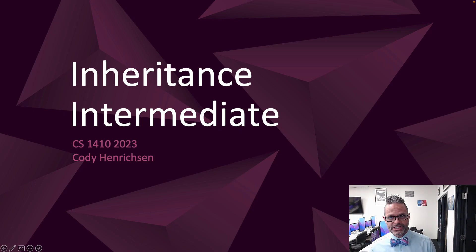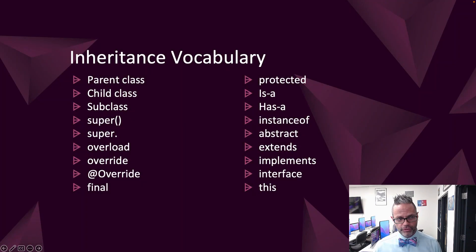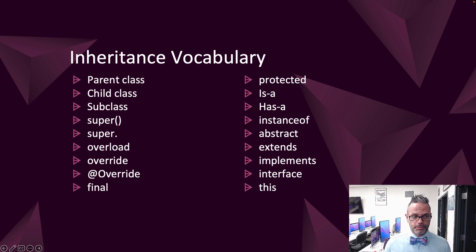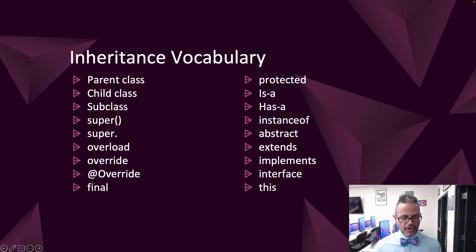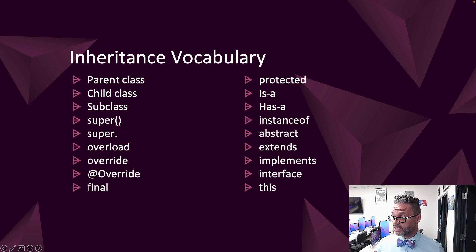Welcome back. We're going to take a look at some more inheritance information today so we can do some cool stuff with Java and explore those concepts. We have vocabulary we went over earlier: parent class, child class, and subclass — generic terms we use to talk about these ideas. 'Super()' refers to the parent class constructor; 'super.' is how we access methods. Overload, override, and overriding deal with methods. The final keyword means you can't inherit from it. Protected is a special keyword we'll be talking about today. The 'is-a' and 'has-a' relationships talk about how we relate objects together. instanceof is really cool and we'll be talking about that. Abstract, extends, implements, interface, and this are some of the things we've seen.